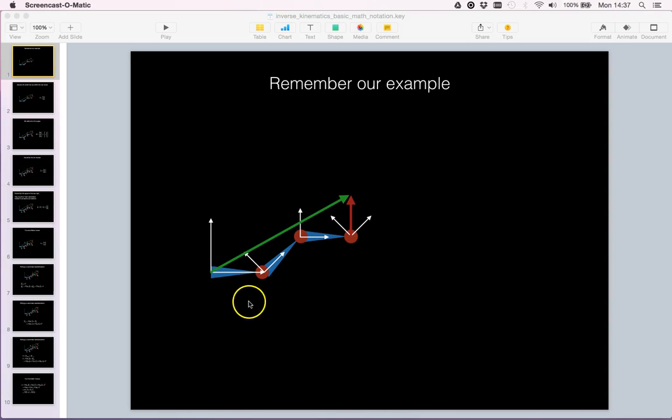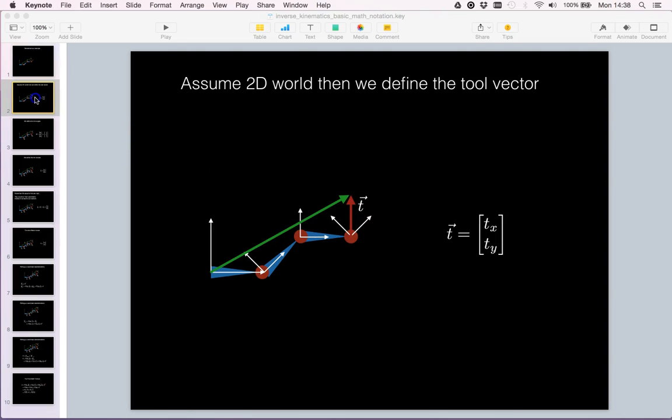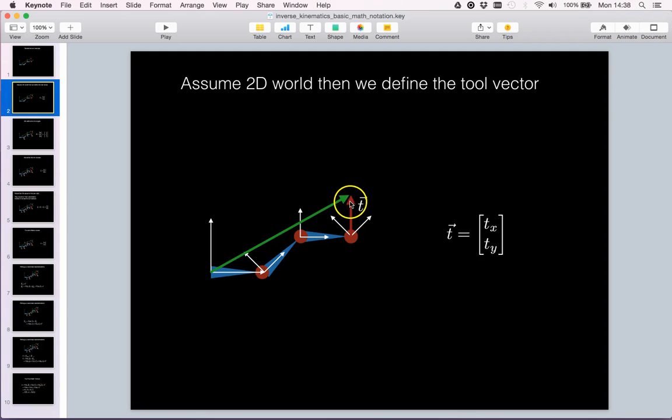We will now introduce mathematical symbols for our previous example of this little three-link serial chain robot. The tooltip vector is specified by the symbol T and it will have an X and Y coordinate as we assume we are in a 2D world.